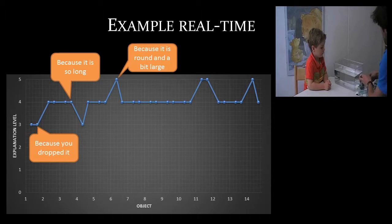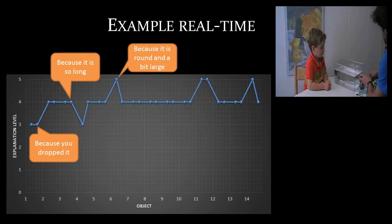This is the complexity line we saw for this particular child. It starts at complexity level 3, then goes up to level 4, then down, then up, and at one point even higher. At one point the child said 'because you dropped it' — complexity level 3, just observing what happened. Later the child said 'because it is so long' about a pencil — a level higher, incorporating one characteristic of the object. Then 'because it is round and a bit large' — that's two characteristics of the object. So throughout this real-time task session, we already saw high variability because it goes up and down.